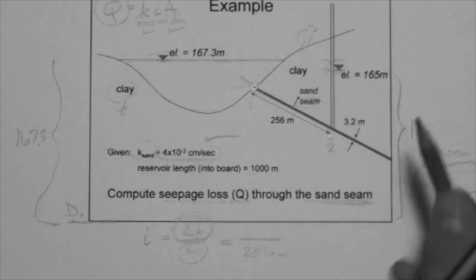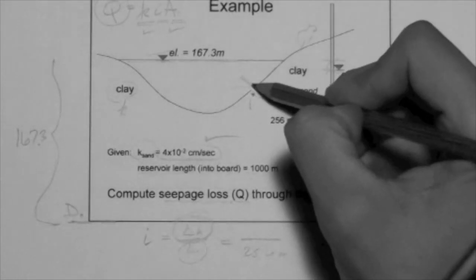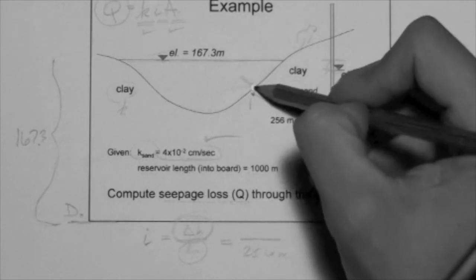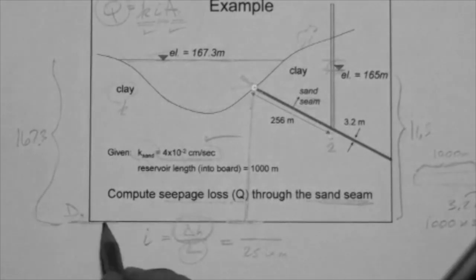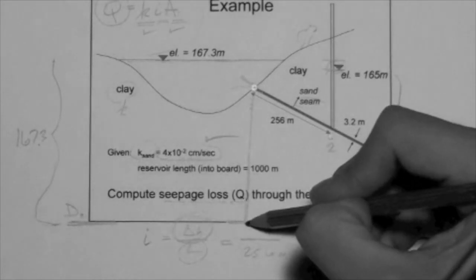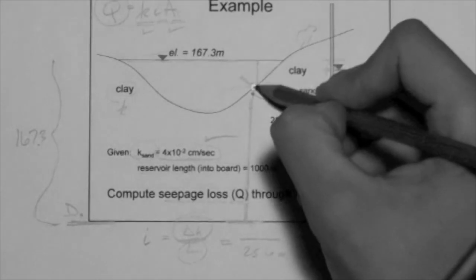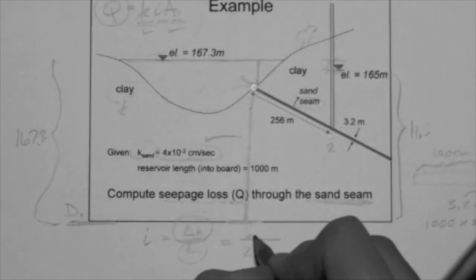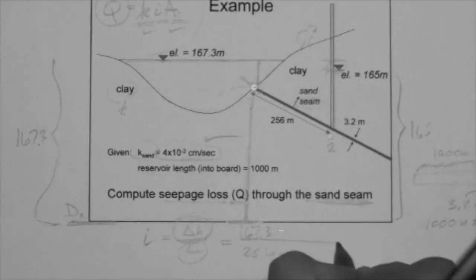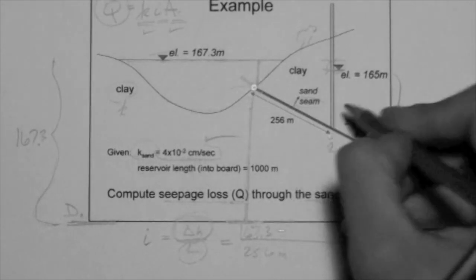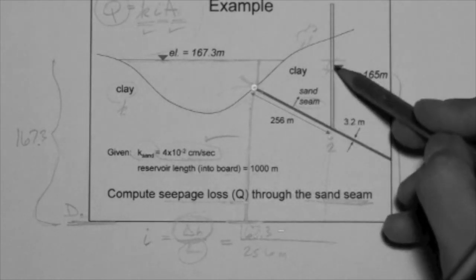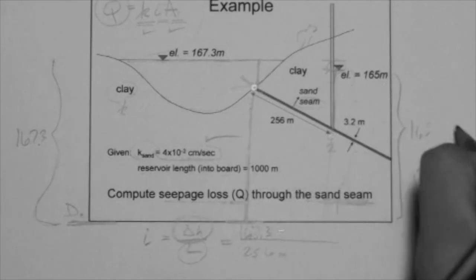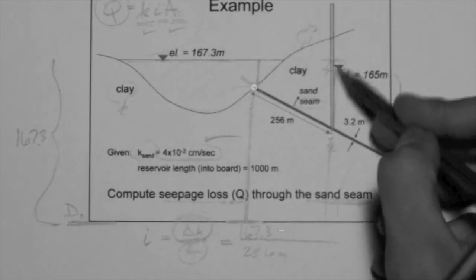What is the delta H? Well, what is the head at this point? Total head. Total head is the elevation head. Remember, this is the datum. So, total head is elevation head plus pressure head. 167.3. What is the head over here? The head is the elevation head plus the pressure head. That's 165. Elevation, pressure, heads. 165.